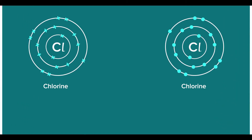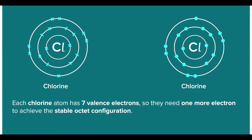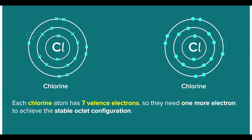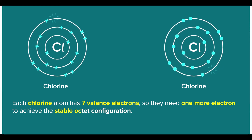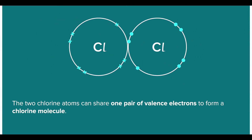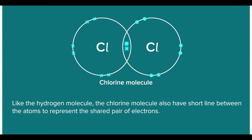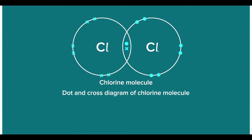Take chlorine gas, Cl2, for example. Each chlorine atom has seven valence electrons, so they need one more electron to achieve the stable octet configuration. So the two chlorine atoms can share one pair of valence electrons to form a chlorine molecule. And like the hydrogen molecule, they also have a short line between the atoms to represent the shared pair of electrons. Hence, the formation of chlorine gas should be written this way, and so this would be the dot and cross diagram of the chlorine molecule.